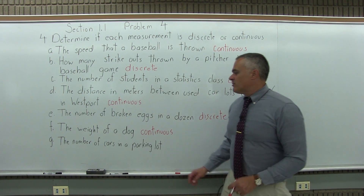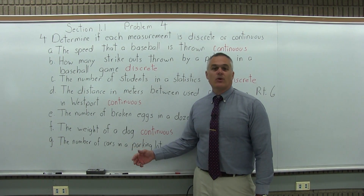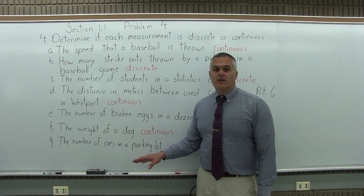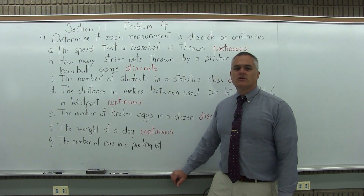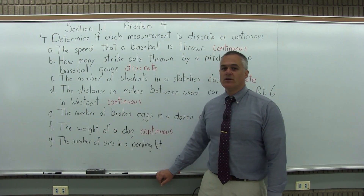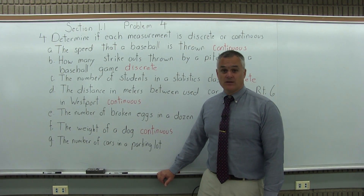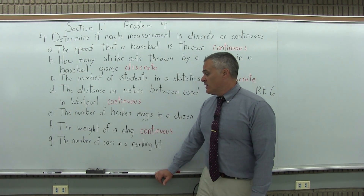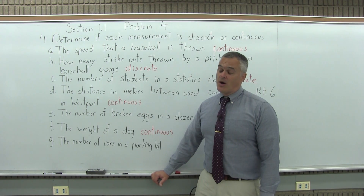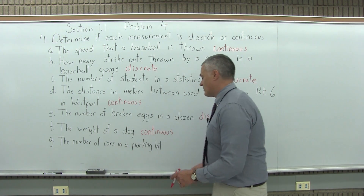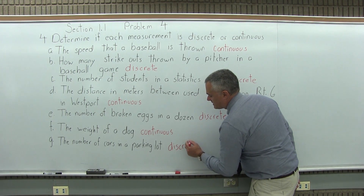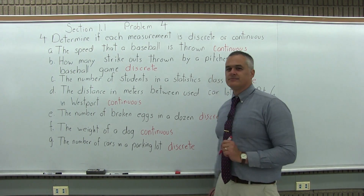And finally, Part G: the number of cars in a parking lot. That would be discrete. How many cars can you have in a parking lot? Let's say 162 — that's a possible number. Could you have 163 cars? You absolutely could. Could you have 162.14 cars in a parking lot? No. There are no answers between 162 and 163. So that makes the number of cars in a parking lot a discrete measurement. Thank you.